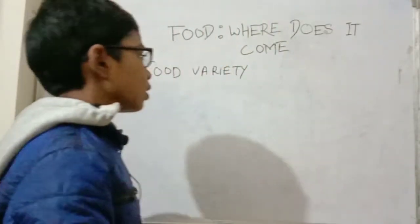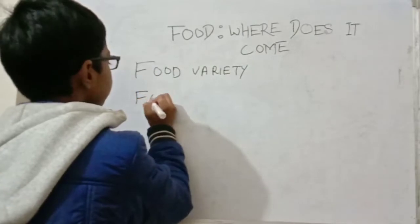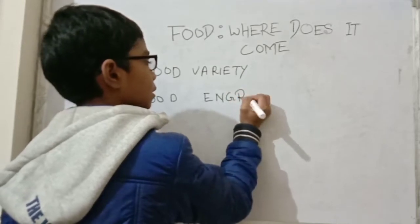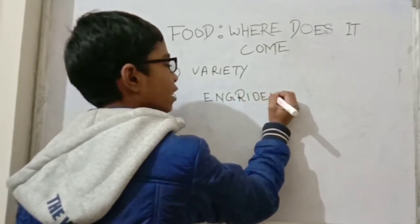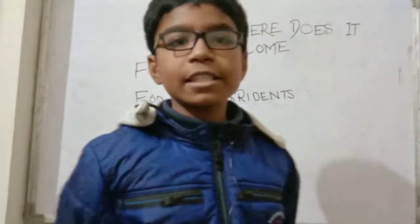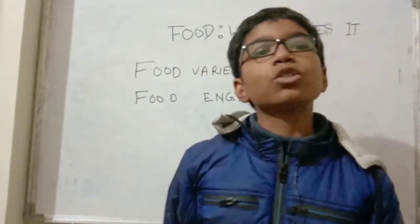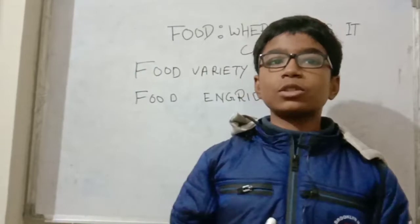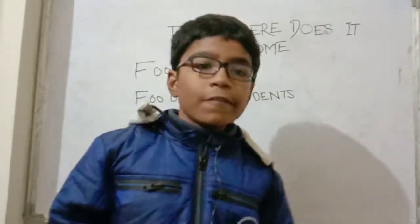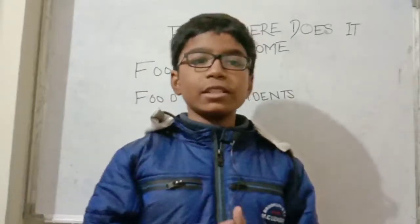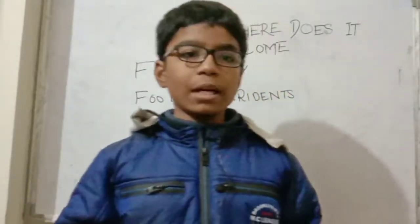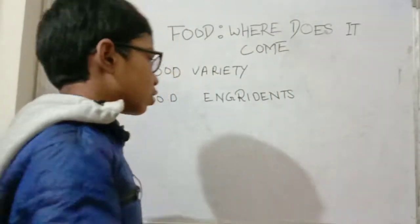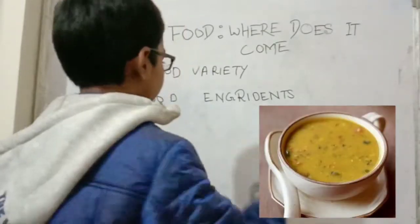Now let's start with food ingredients. Food ingredients are the things needed for making a food so that it becomes tastier and more enjoyable for us. For example, let's list the food ingredients of some foods. Let's take dal as an easy one.